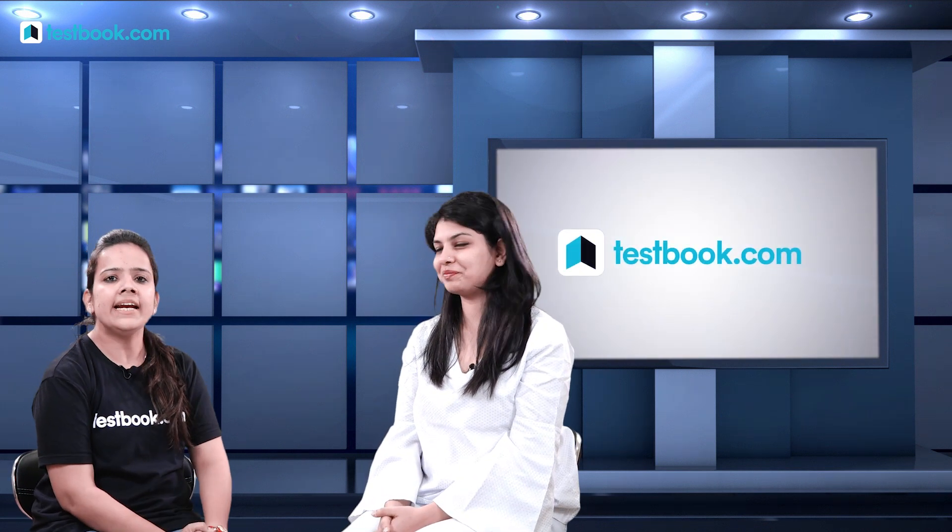The next post is Assistant in the Intelligence Bureau (IB). This is a computer-based job involving data collection and IB-related work. Postings are in 21 cities, with headquarters or IB cells mainly in Delhi. Salary is around 55,000. Promotions are relatively fast — in 5 to 6 years you get the first promotion to Superintendent, then Assistant Director, then Deputy Director, and finally Director before retirement.